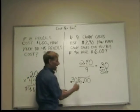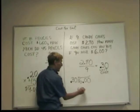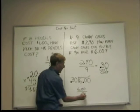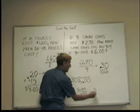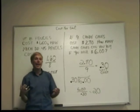...and you could do that on your calculator, it would be six dollars divided by the thirty cents, you would get an answer of twenty, twenty candy canes.